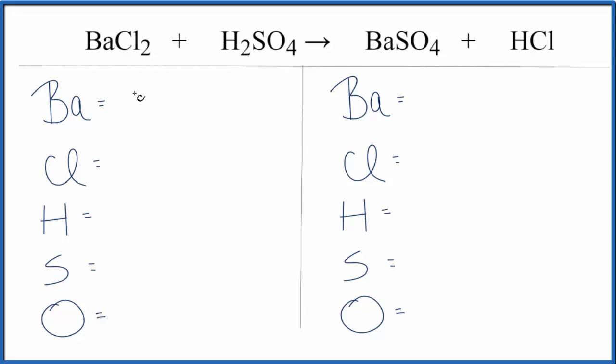Count the atoms up. We have 1 Ba, 2 Cls, 2 hydrogens, 1 sulfur, 4 oxygens.